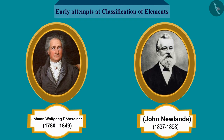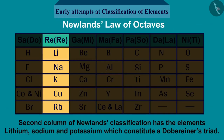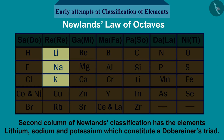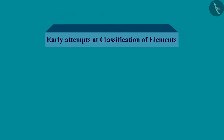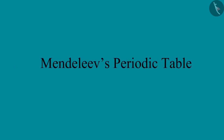Before we end this discussion, we can observe that Döbereiner's Triads also exist in columns of Newland's Law of Octaves. For example, the second column of Newland's classification has the elements Lithium, Sodium, and Potassium, which constitute a Döbereiner's Triad. So, in this video we studied the early attempts at classification of elements. In the next video, we will learn Mendeleev's periodic table.